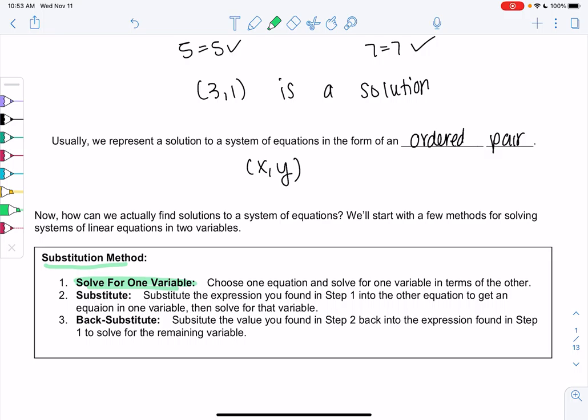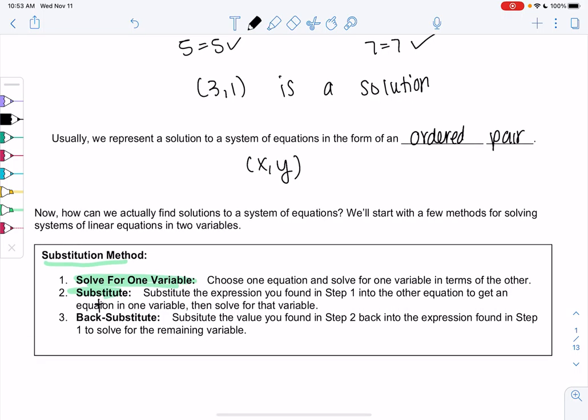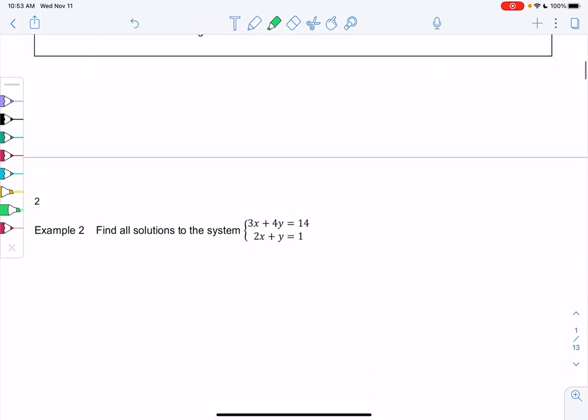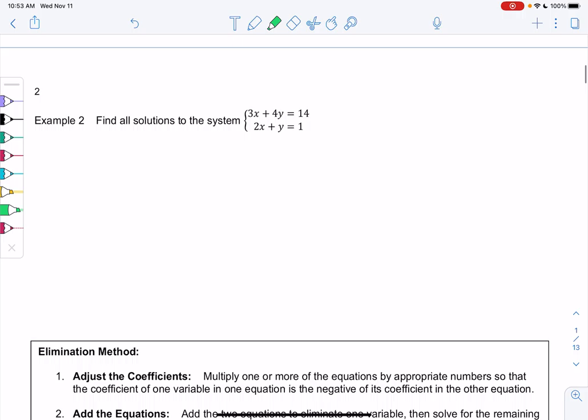So let's start with substitution. What we'll do is we'll solve for one of the variables. Choose one equation and solve for one variable. So you'll either solve for x or y. And then you substitute that into the other equation. So substitute the expression from step 1 into the other equation to get an equation in one variable and then solve. And then we'll back substitute to find the solution of the other variable. So let's just jump in and see what's going on.